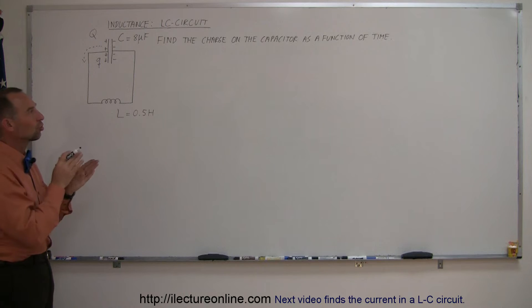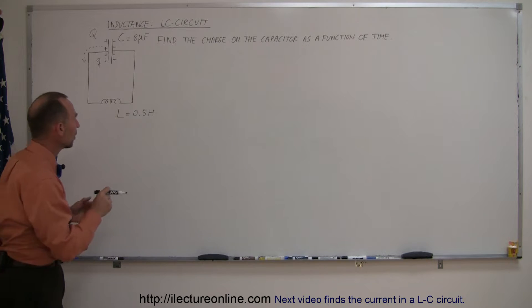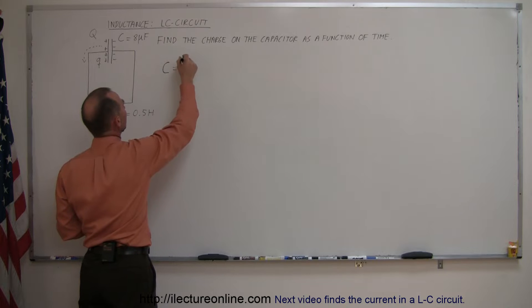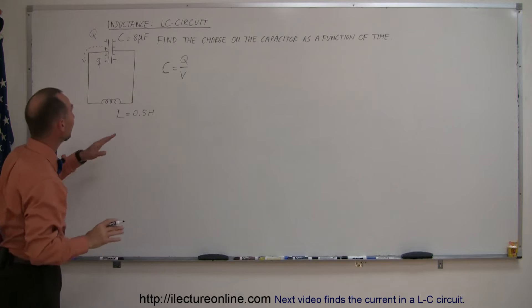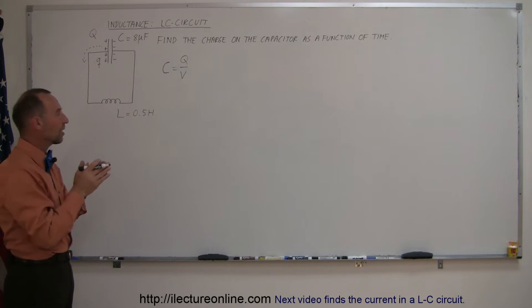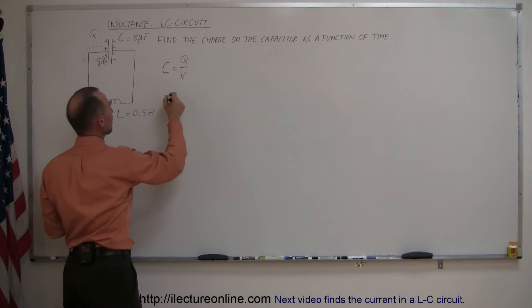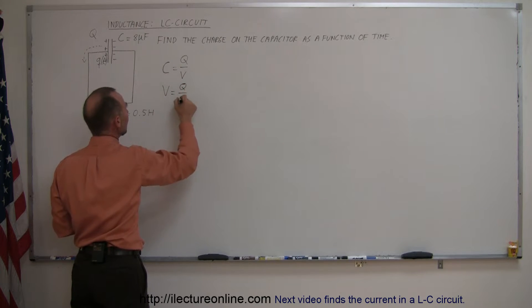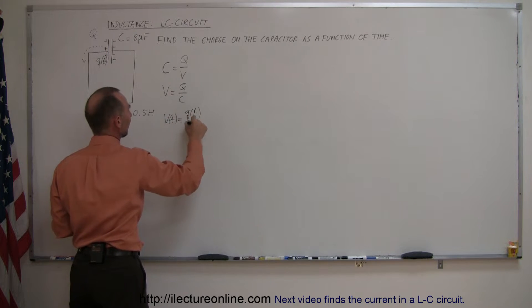So what we're trying to do here is find the charge on the capacitor as a function of time, and the way to do that is as follows. First of all, we take the definition of capacitance, which is equal to the charge on the capacitor Q divided by the voltage. Since small q represents the charge as a function of time, the voltage across the capacitor is defined as Q over C — so the voltage as a function of time is equal to Q as a function of time divided by the capacitance.